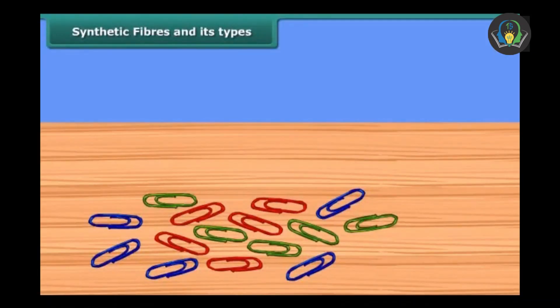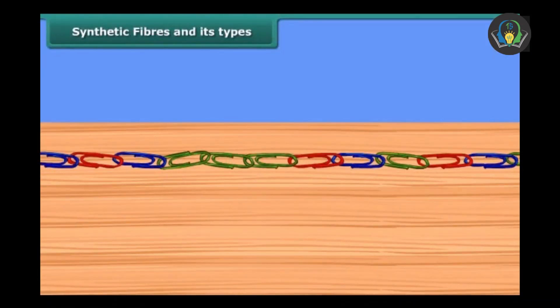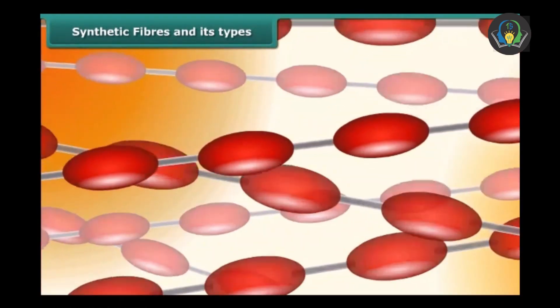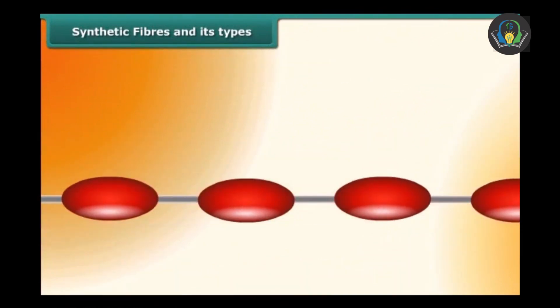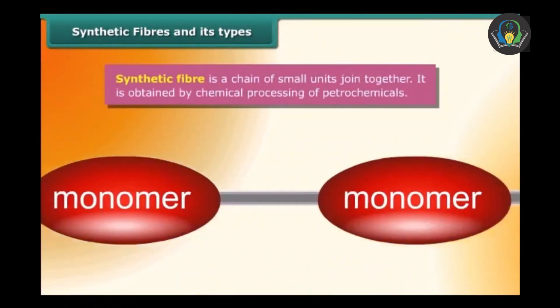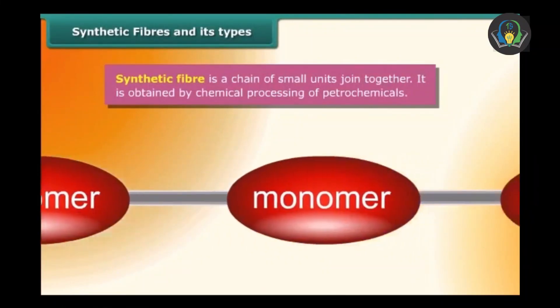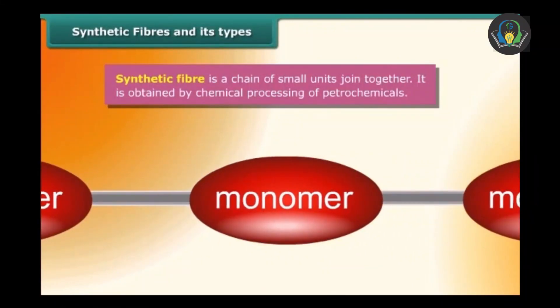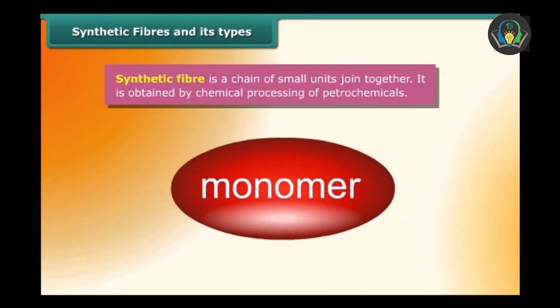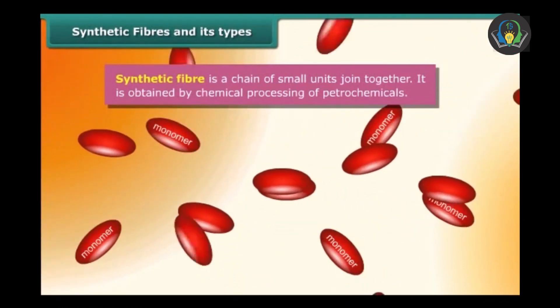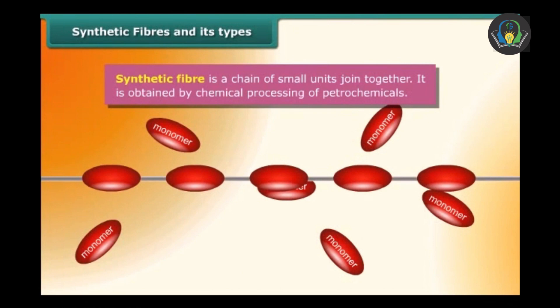Let's join all the paper clips in one single line. What do you observe? This is the same organization present in any polymer. Each polymer is made up of smaller units named as monomers. It is obtained by chemical processing of petrochemicals, and so synthetic fibers are an example of a polymer.